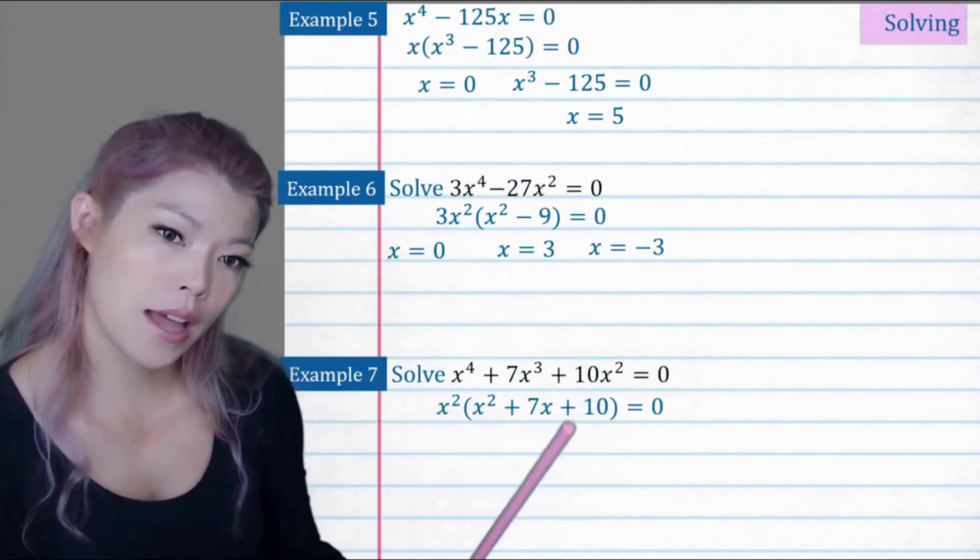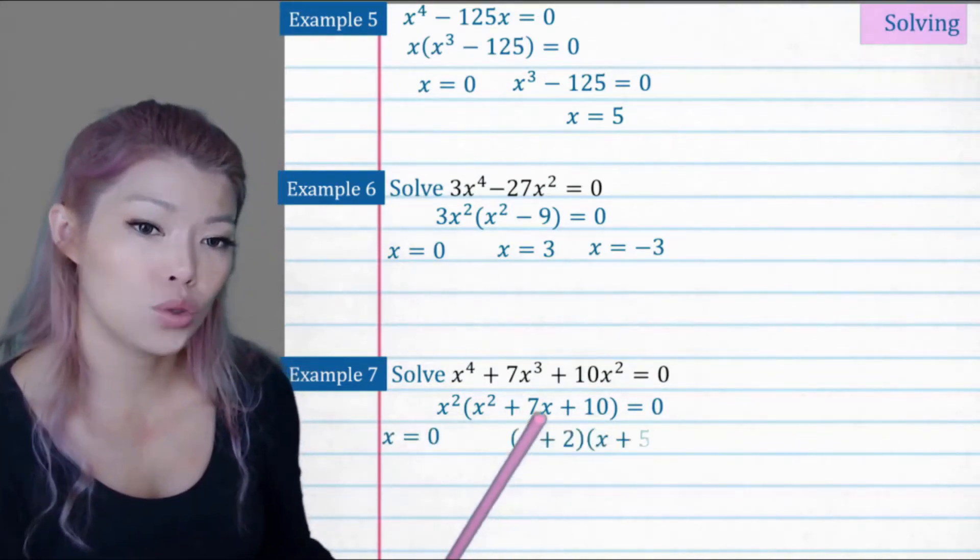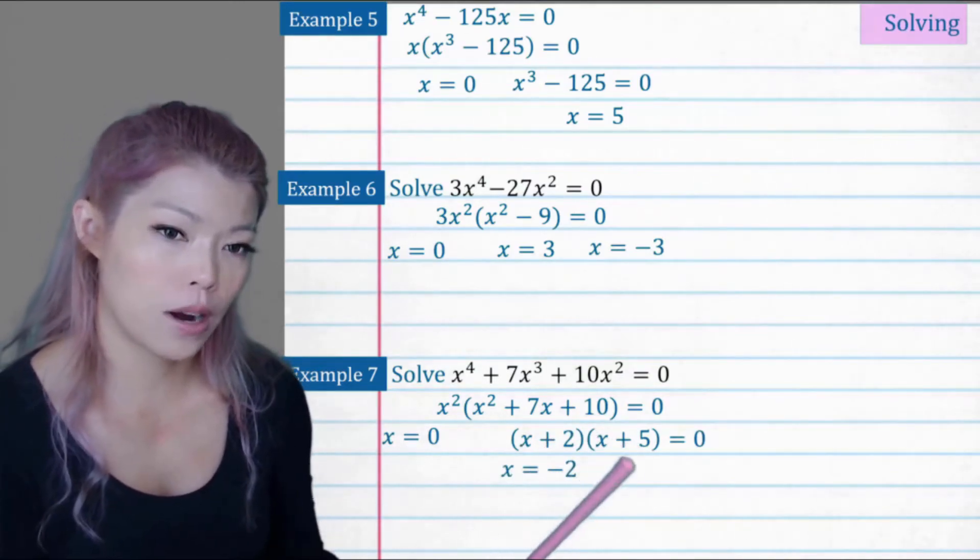In this part, two numbers that add to five, sorry, multiply to 10 and add to seven, which is five times two. So two and five. So our x values are negative two for that bracket and negative five.